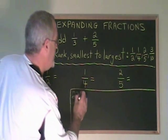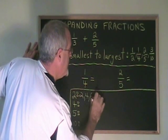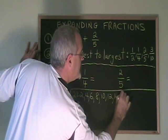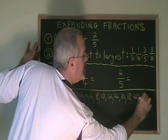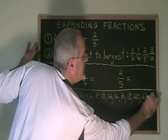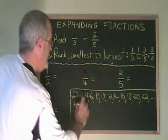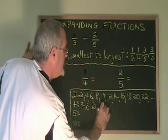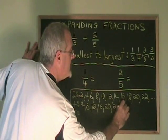The multiples of 2: 2, 4, 6, 8, 10, 12, 14, 16, 18, 20, 22, and the list goes on. The multiples of 4: 4, 8, 12, 16, 20, 24, and the list goes on.